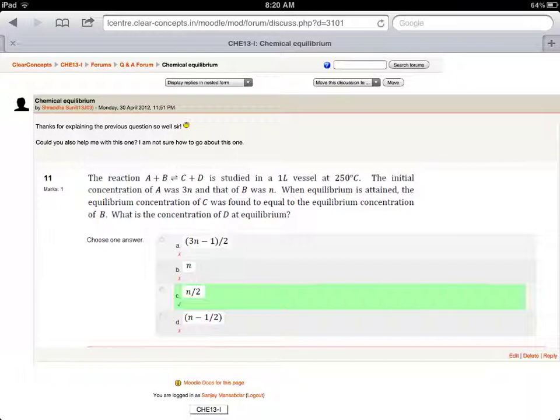What you need to read from this question is this reaction here. Note that all the coefficients of A, B, C and D are all 1. Note that the initial concentration of A is 3N and the initial concentration of B is N. Also, the volume is 1 litre, which means that when you calculate concentrations as moles per litre, the volume that you're dividing by is 1. So, you can pretty much ignore it, same as the previous problem you asked.